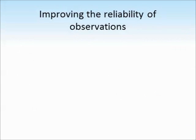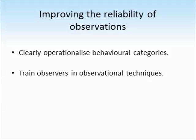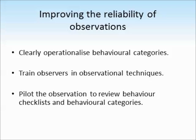You won't have to actually calculate inter-rater reliability in an exam, but you could be asked how it can be assessed or how to improve the reliability of observations. One thing we can do is clearly operationalise the behavioural categories — defining what counts as a shove or a kick, for example — so anyone doing the observation knows exactly what behaviour to look out for. Another way is by training observers in observational techniques, such as time sampling or event sampling. Lastly, it's always a good idea to pilot an observation study to check if the behavioural checklist and categories cover all eventualities, adding any behaviours that observers notice are missing.